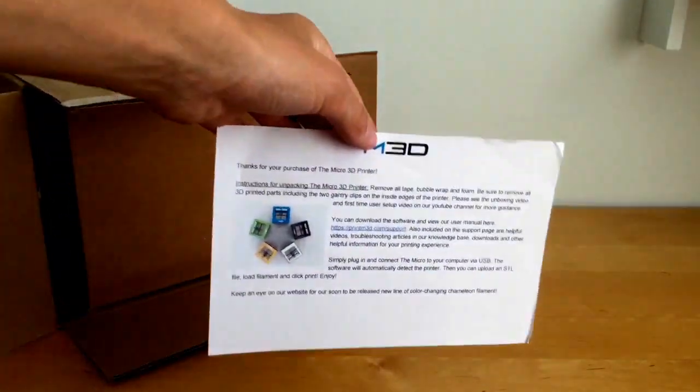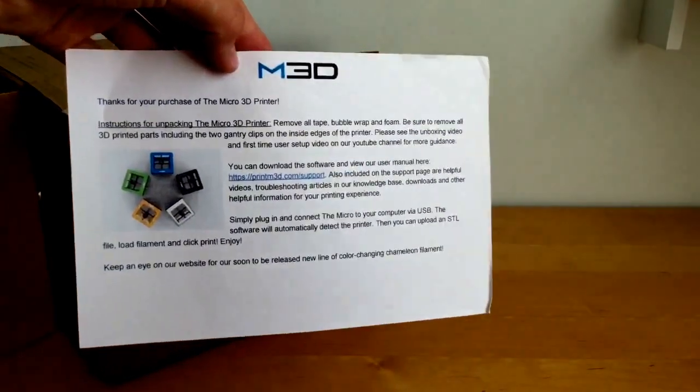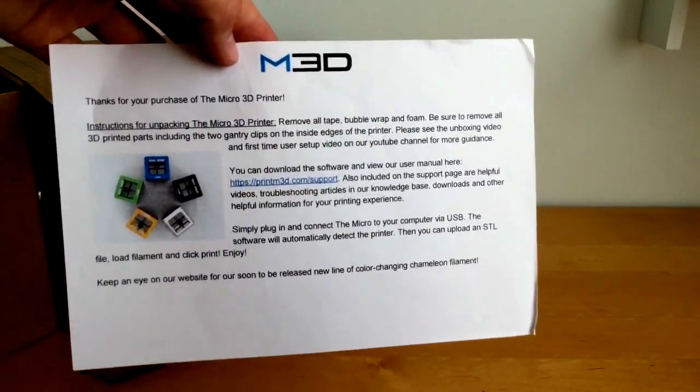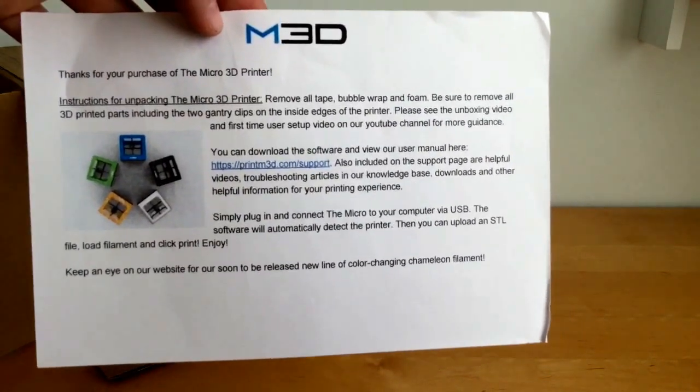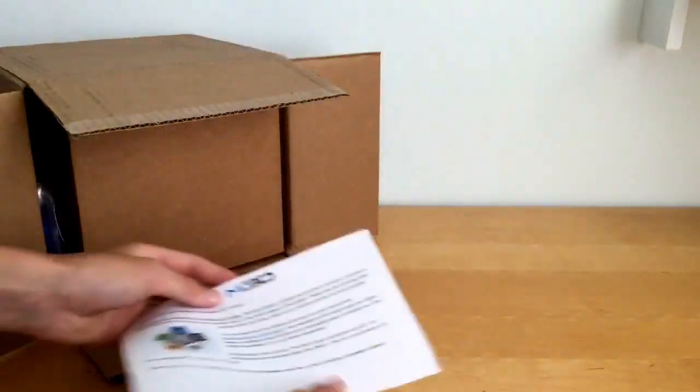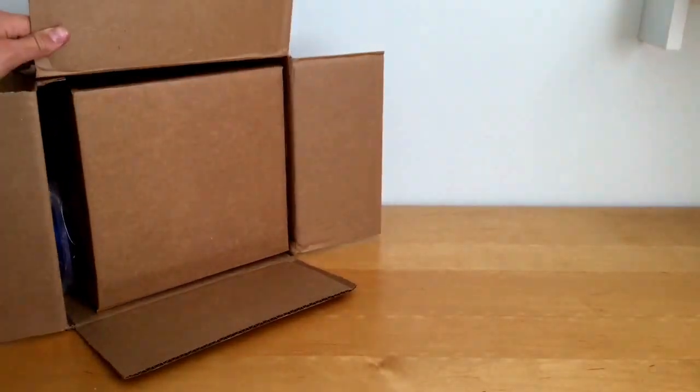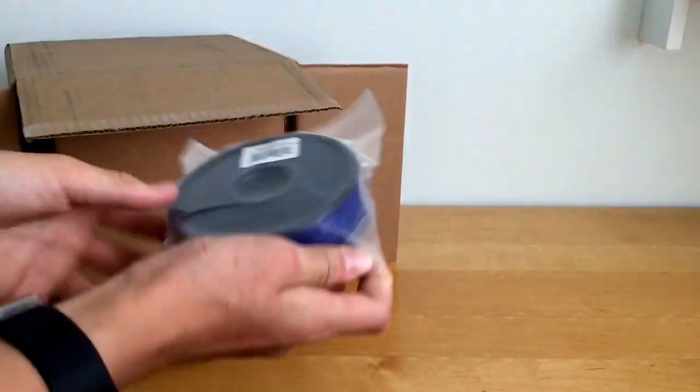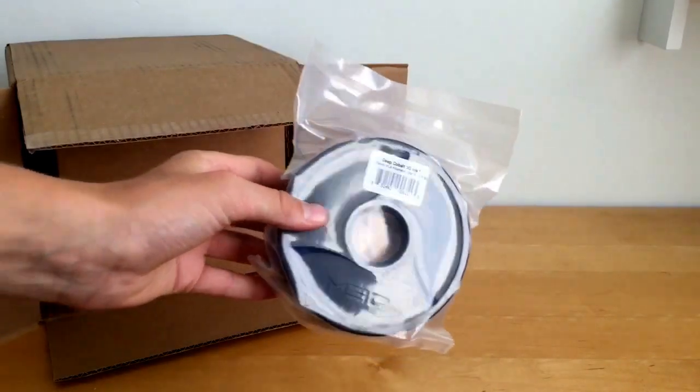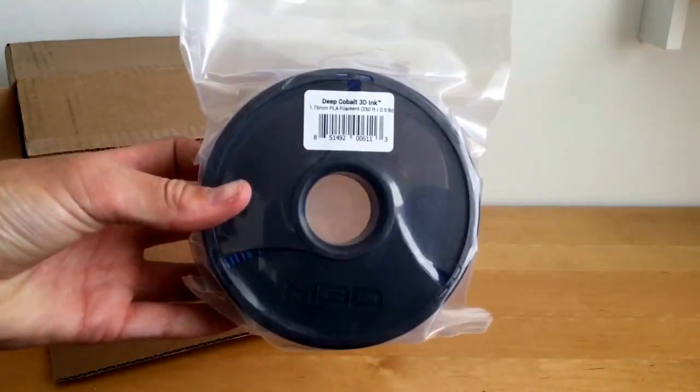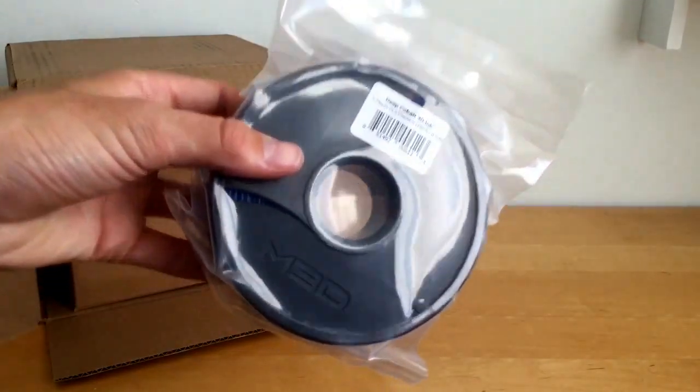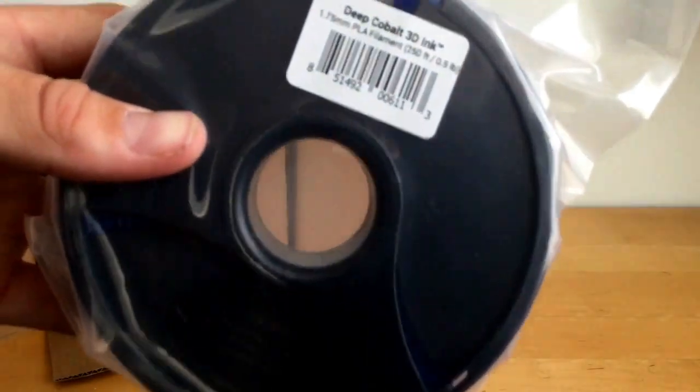At the top here we've got instructions saying to download software, manuals and stuff. I only got one reel of filament, that's because I'm going to be buying some 3D Prima filament from Amazon because you get one kilo, this is 250 feet.